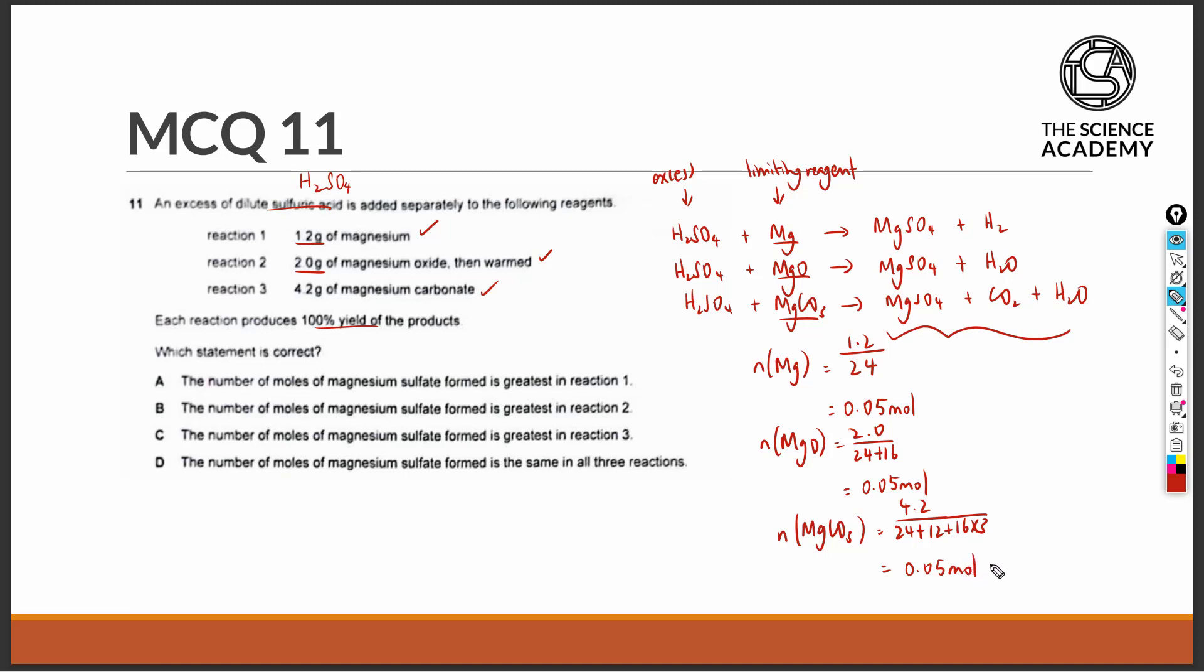So the same amount of Mg, MgO, and MgCO3 has been reacted in terms of the number of moles. Since the ratio of the second reactant to the product salt formed is 1 to 1, we can assume that in all three reactions, 0.05 moles of magnesium sulfate salt is formed in each reaction.